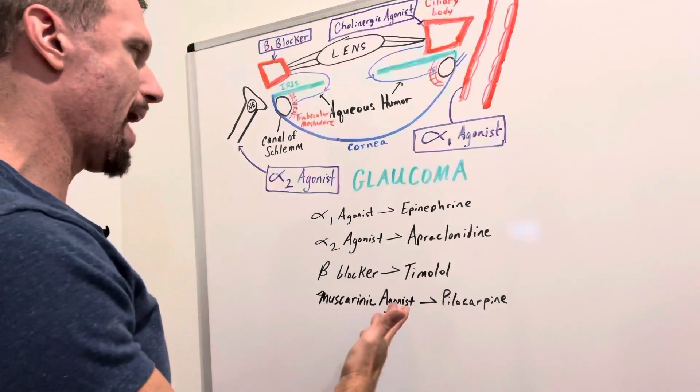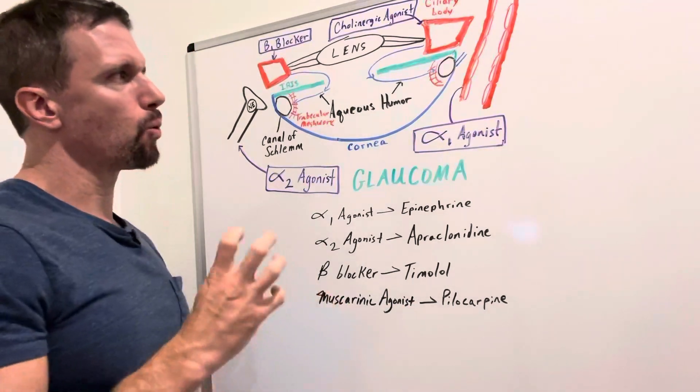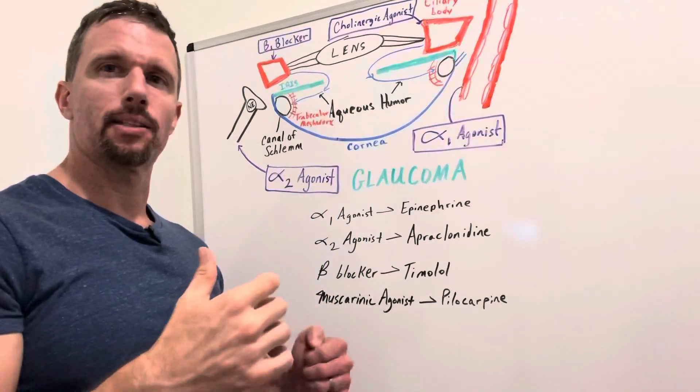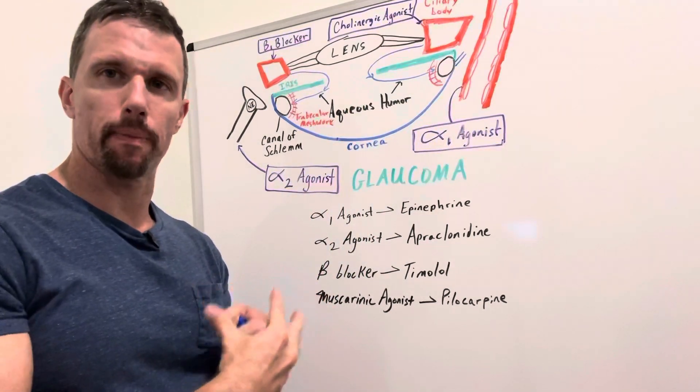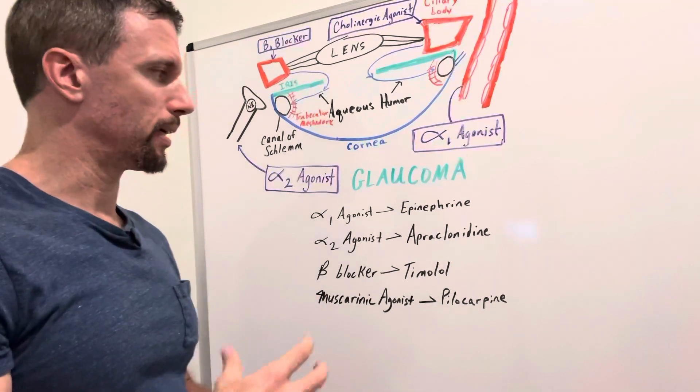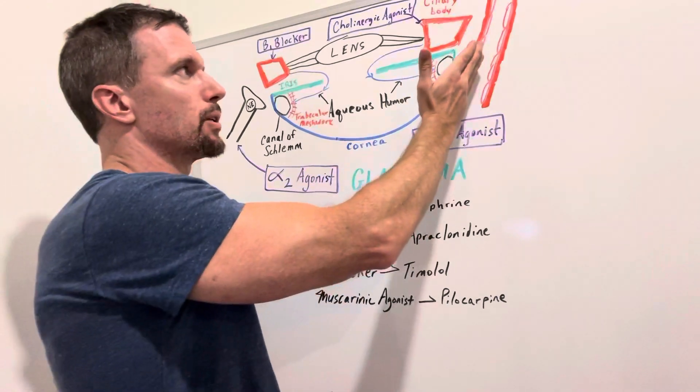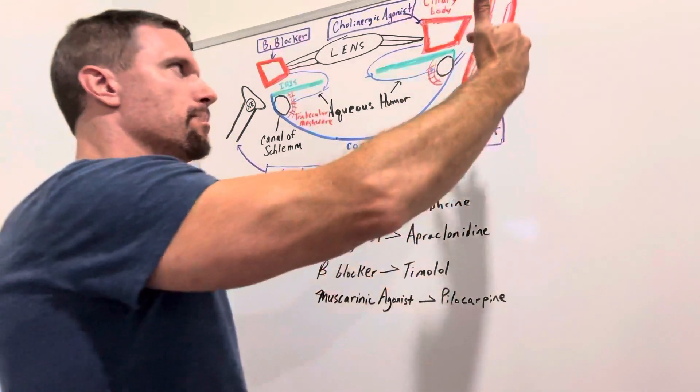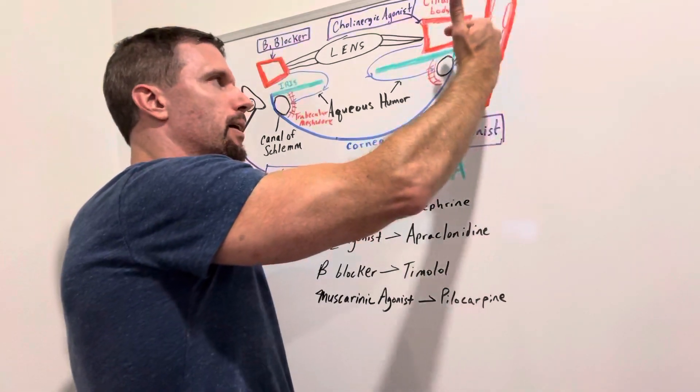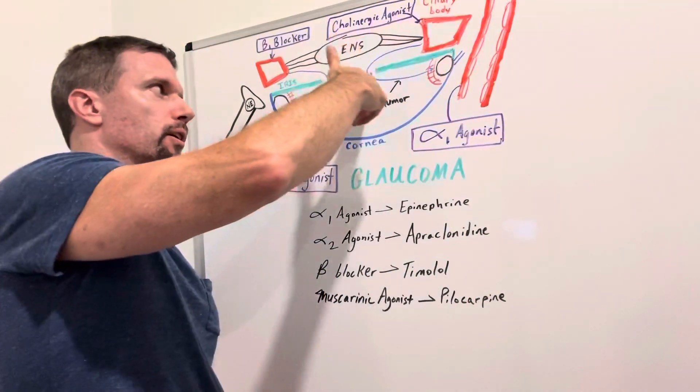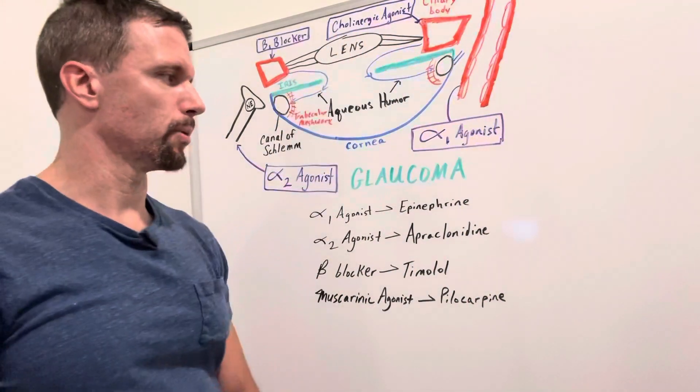And then alpha-1 agonist. So alpha-1 adrenergic receptors on the blood vessels, when they bind to norepinephrine or epinephrine, they will constrict. And when it constricts, it's not going to release as much fluid into that ciliary body. So you're not going to have as much secretory fluid coming in and therefore you're not going to make as much aqueous humor.